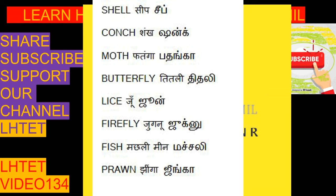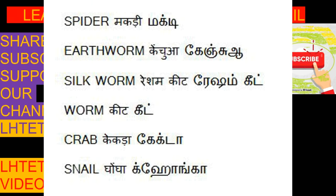Prawn we say Jinga. Spider we say Makdi. Earthworm we say Kenchua. Silk worm is Resham Keet. Worm means Keet.